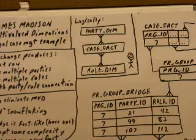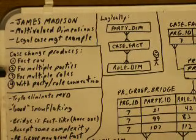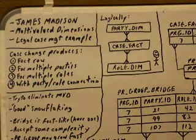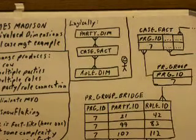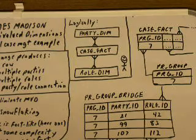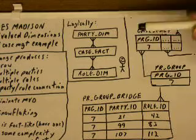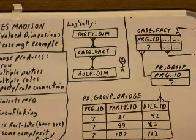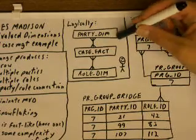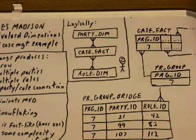We have to do it with multi-valued dimensions because you can have multiple parties and multiple roles for any given factor. We need to represent this with multi-valued dimensions, which are a little bit complicated in their implementation. Logically, however, they are quite simple. Just as we would represent single-valued dimensions by putting the fact table in the middle and putting the dimensions around it in star form, we do the same thing with multi-valued dimensions.